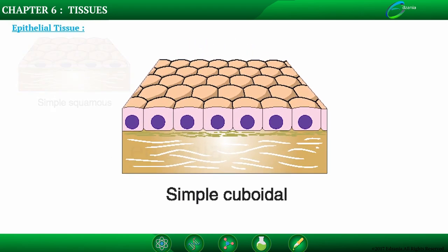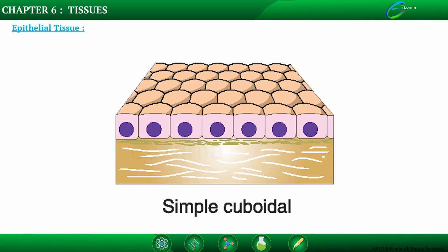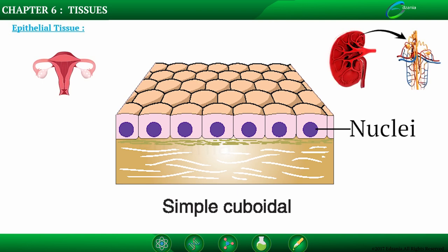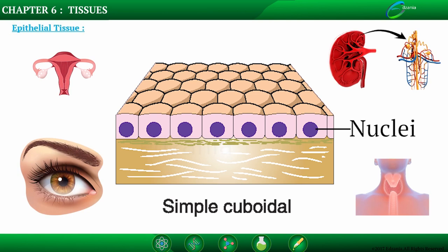Simple cuboidal epithelium consists of a single layer of cube-shaped cells with large, spherical, central nuclei. Simple cuboidal epithelium is found on the surface of ovaries, the lining of nephrons, the walls of renal tubules, and parts of the eye and thyroid.